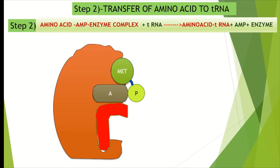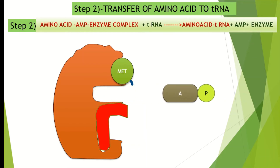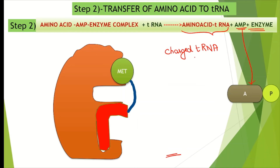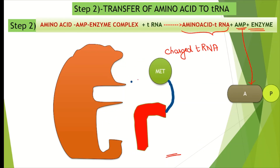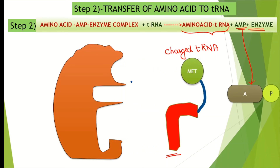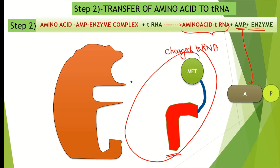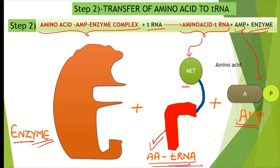As soon as the transfer RNA binds, AMP is released and bonds are formed between the amino acid and the transfer RNA, resulting in the formation of the amino acid–tRNA complex. AMP is released at this time. At the end of this reaction we get our charged transfer RNA — that is, transfer RNA connected to the amino acid — along with AMP and the released enzyme.